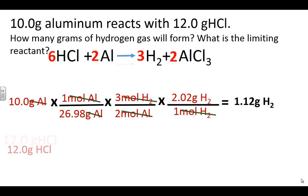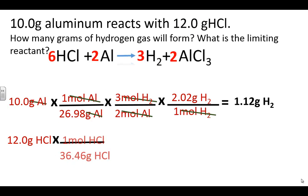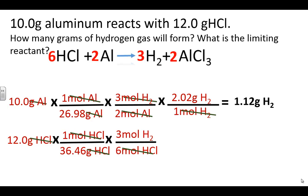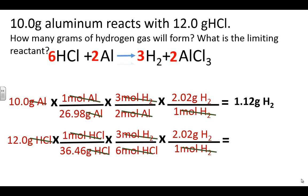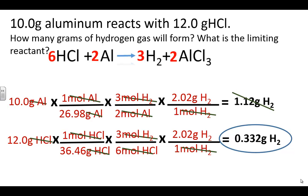Now we figure out how many grams of hydrogen 12 grams of hydrochloric acid will form. Converting grams to moles, then moles of hydrochloric acid to moles of hydrogen using the mole ratio, and then converting moles of hydrogen to grams using the molar mass of hydrogen. We find that 12 grams of hydrochloric acid is capable of only producing 0.332 grams of hydrogen. The hydrochloric acid is limiting — once we've made 0.332 grams of hydrogen, we can't make anymore. That means hydrochloric acid is the limiting reactant, and aluminum is our excess reactant.